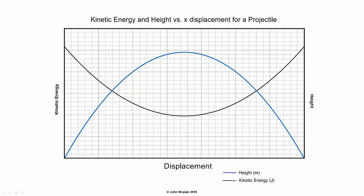This graph shows the kinetic energy and height of a projectile versus distance. The trajectory of the projectile — distance versus height — is shown in blue, and the kinetic energy is shown in black. The kinetic energy of the projectile is at a minimum at the maximum height, but does not actually drop to zero, except in the case of a projectile fired vertically, because the X component of the projectile is constant throughout flight. The graph of kinetic energy versus distance is parabolic, as shown.